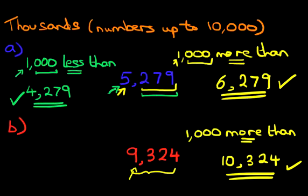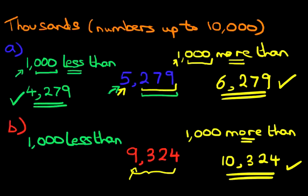That was nice and easy, wasn't it? Let's have a look at this side. We've got 1,000 less than the number 9,324. Now again, it's nice and easy, shout the answer out.